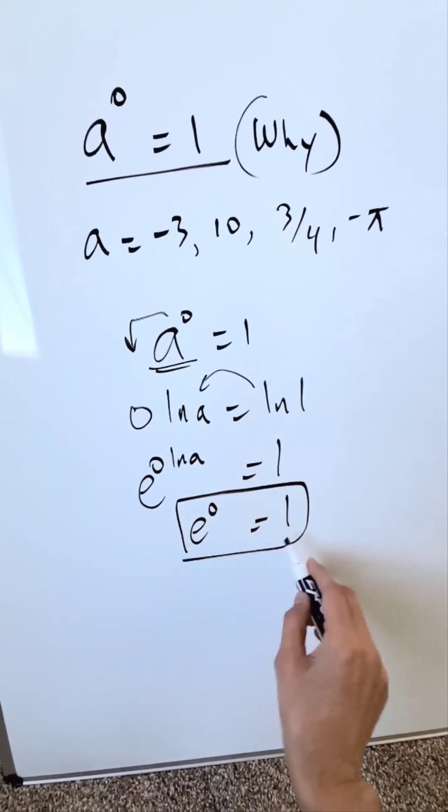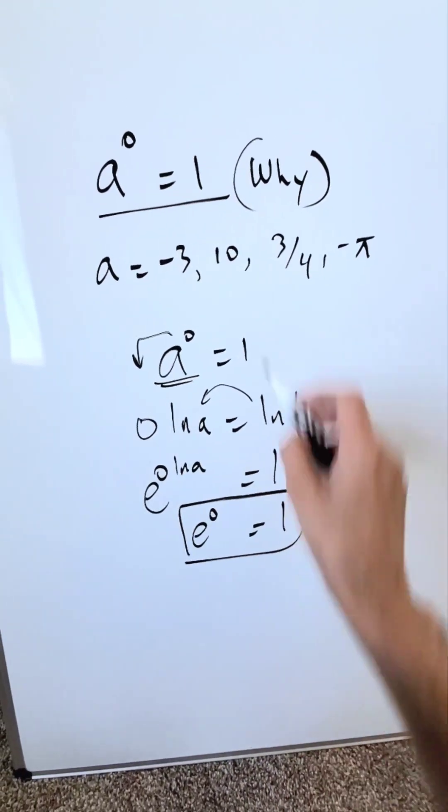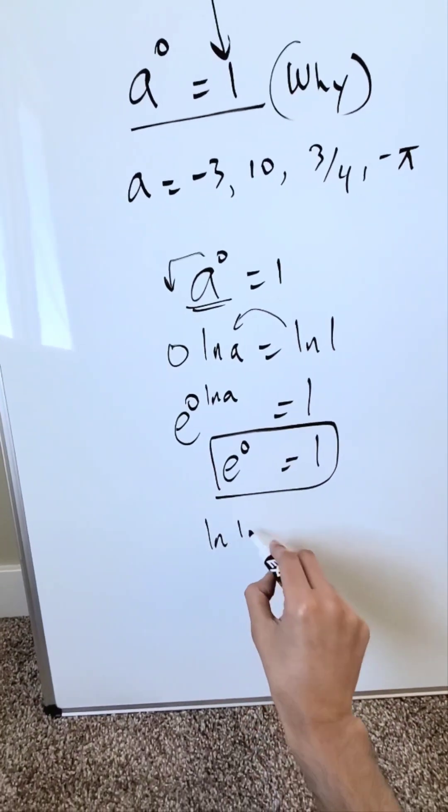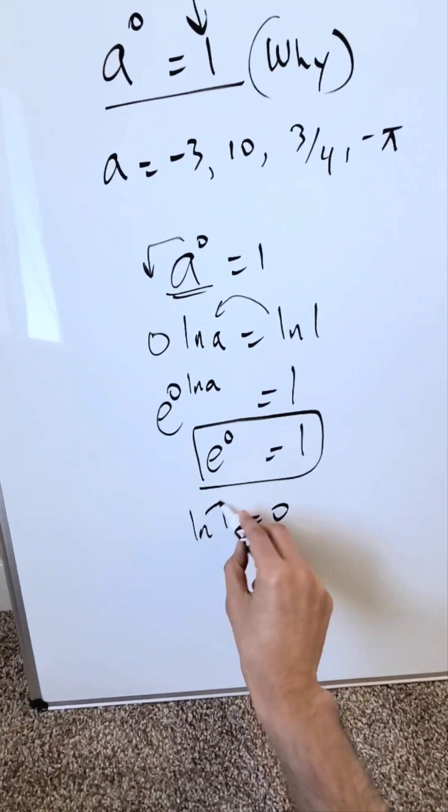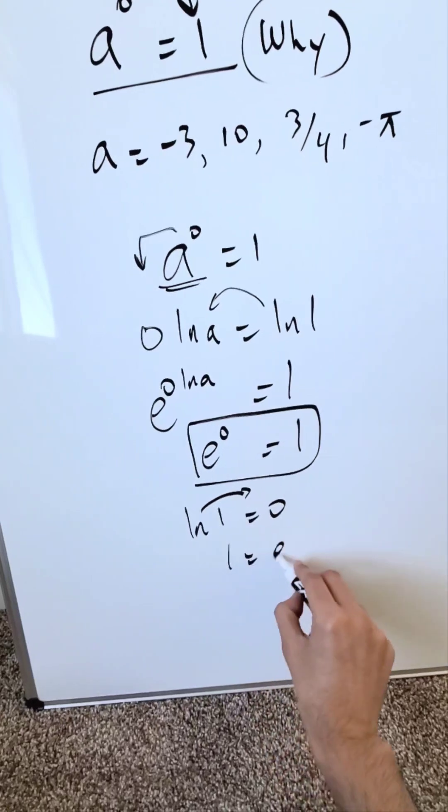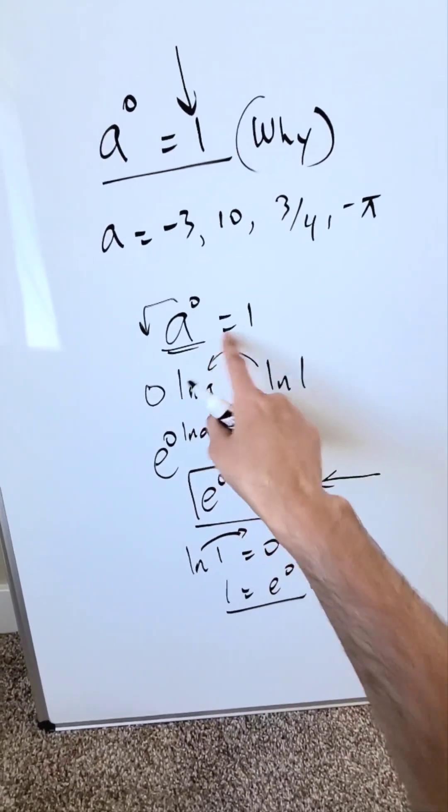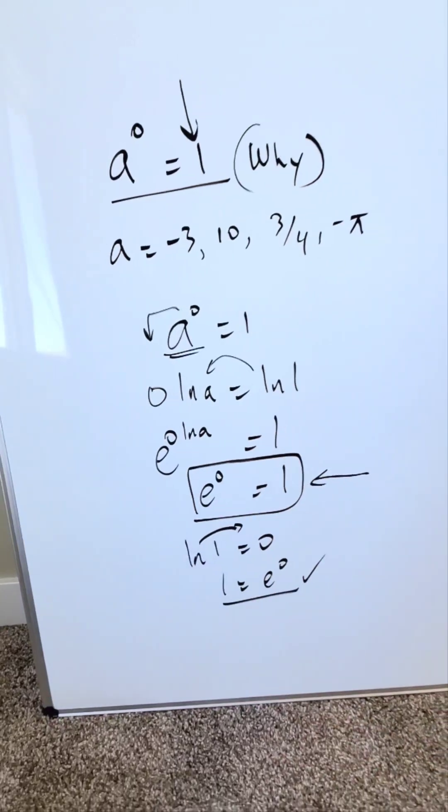Now I just have to prove e to the power of 0 is equal to 1 and we will indeed prove this specific aspect. Look right over here. Natural log of 1 is known to be 0. Push the natural log on the other side. I have 1 is equal to e to the power of 0 and I have checked it out and it indeed is true. Anything to the power of 0 is indeed equal to 1.